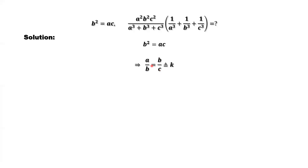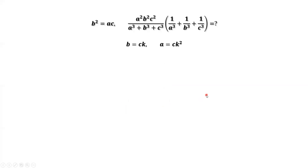We can define the same ratio as k. From this result, we have b equals c times k, and we have a equals b times k. Because b equals c times k, we replace b by c times k. Therefore, a equals c times k squared. Now we are ready. In this expression, we replace b by c times k and a by c times k squared.